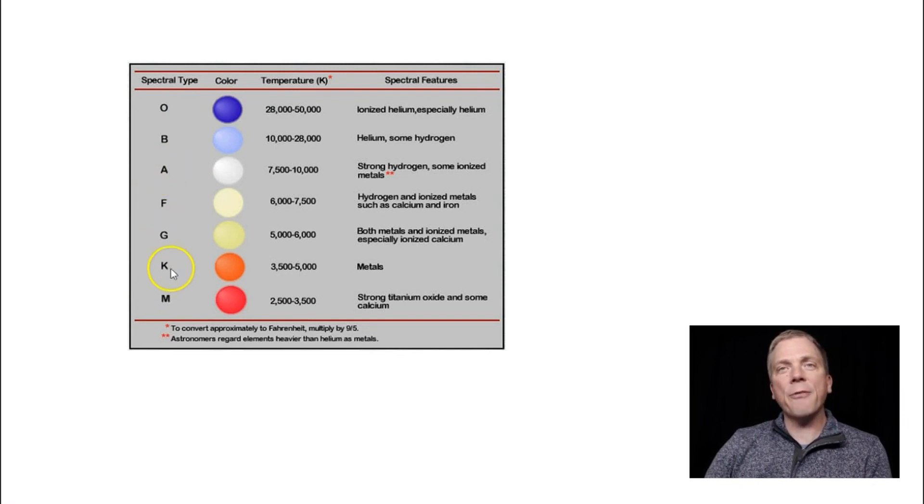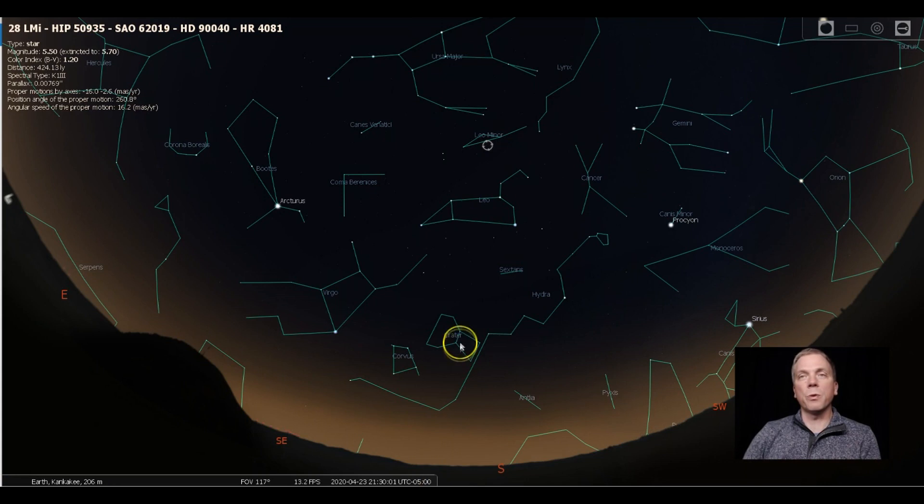We're going to look at some A and F and K class stars mostly. So you can see how the temperature range is different. We're looking at the 8,000 to 10,000 degrees in the A class. And then down at K, we're looking at just 3,500 to 5,000. And then M class at just 2,500 to 3,500. So much cooler. And you'll see the color difference.